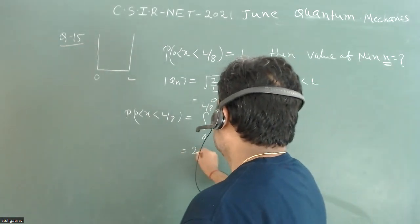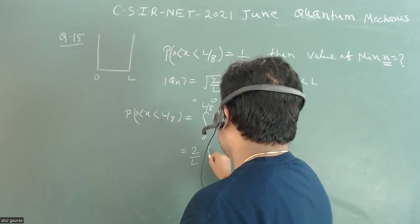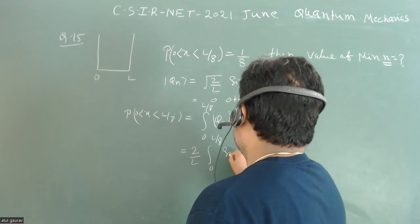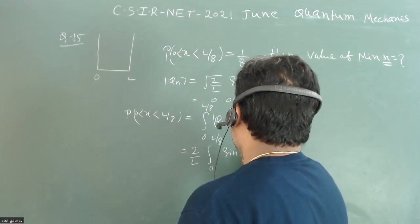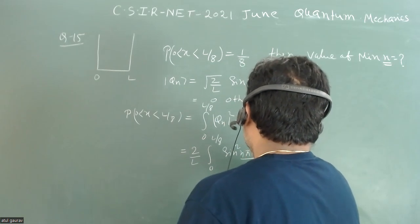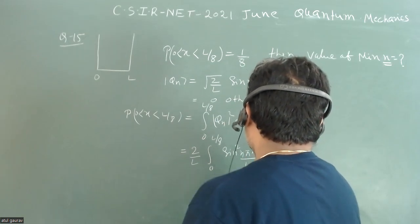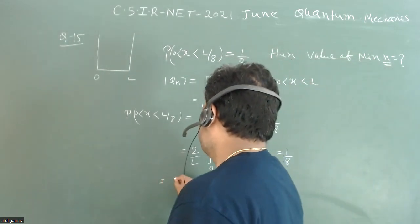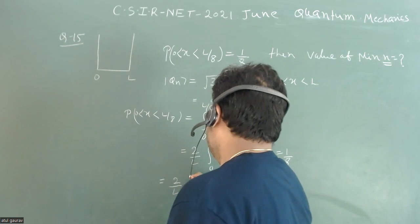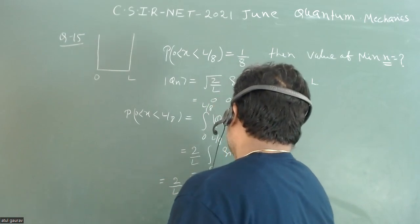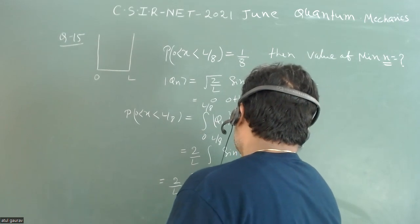When we go for this integration, it's very simple. We have 2/L times the integral from 0 to L/8 of sin^2(n*pi*x/L) dx, which must be equal to 1/8. Now we can just open up this particular integration.